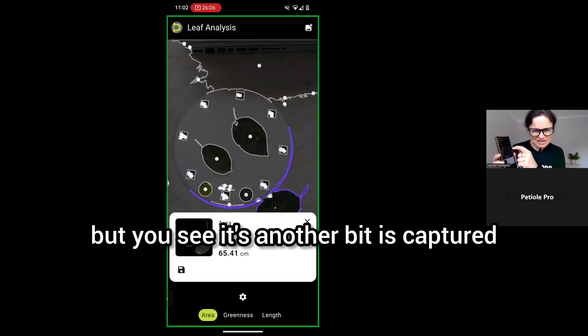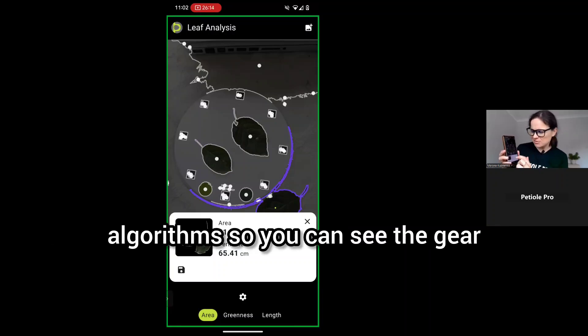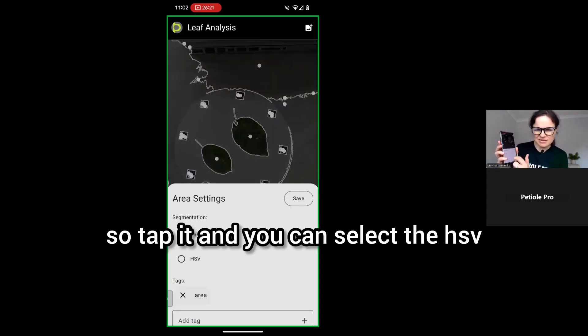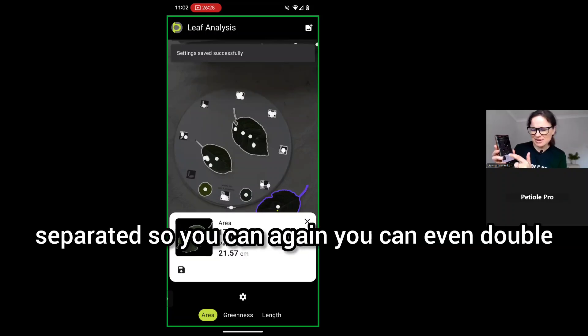But you see, another bit is captured. This is the point where you can check the different segmentation algorithm. You can see the gear button, the gear icon. Tap it and you can select the HSV segmentation. Try this one. Now it's separated. You can again double check the accuracy.